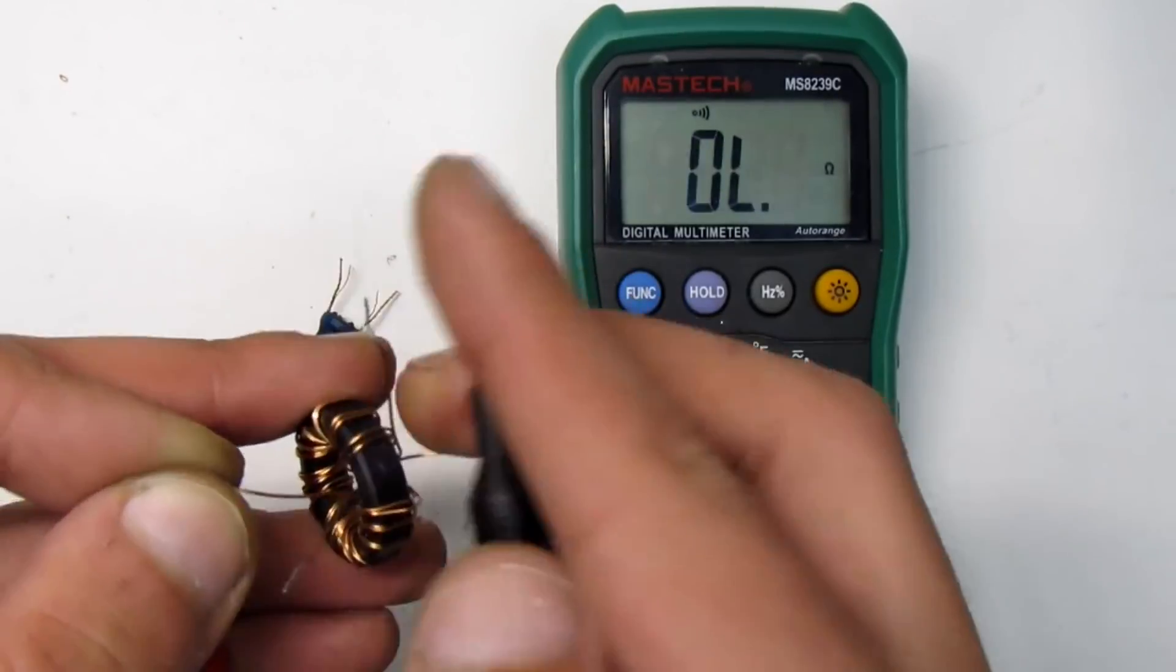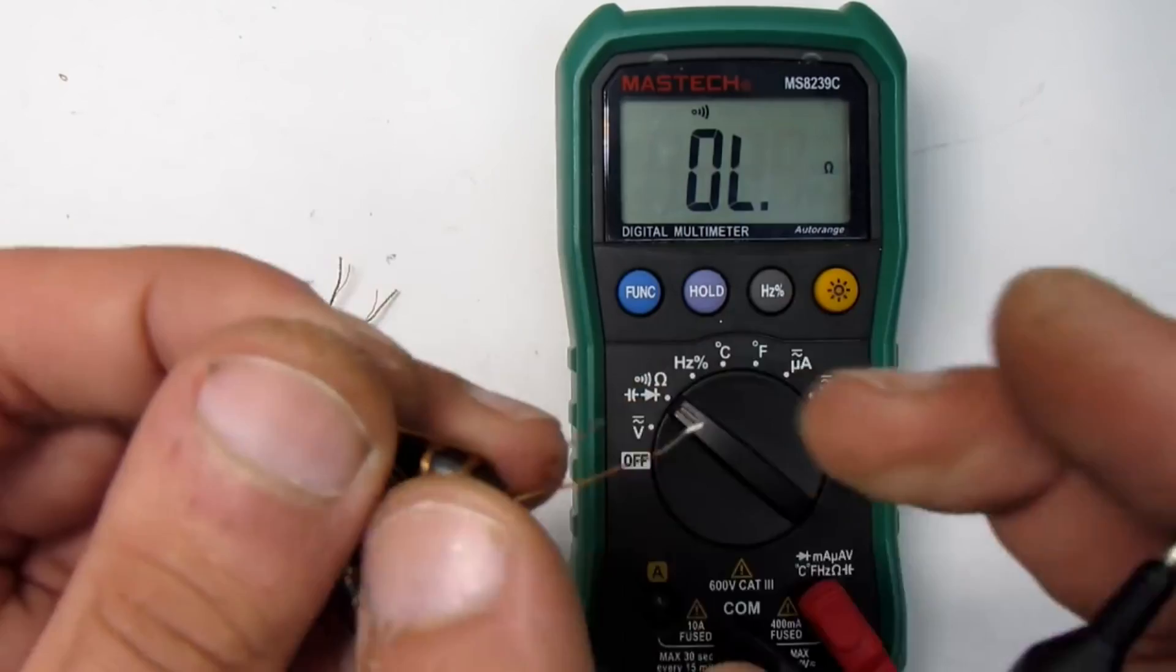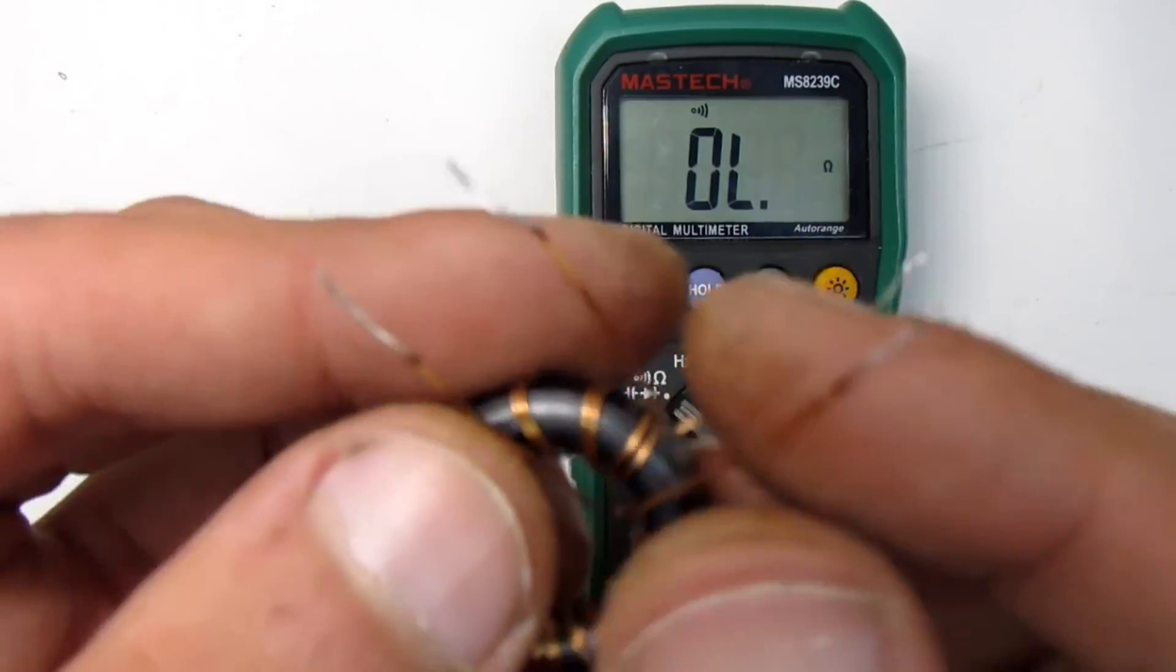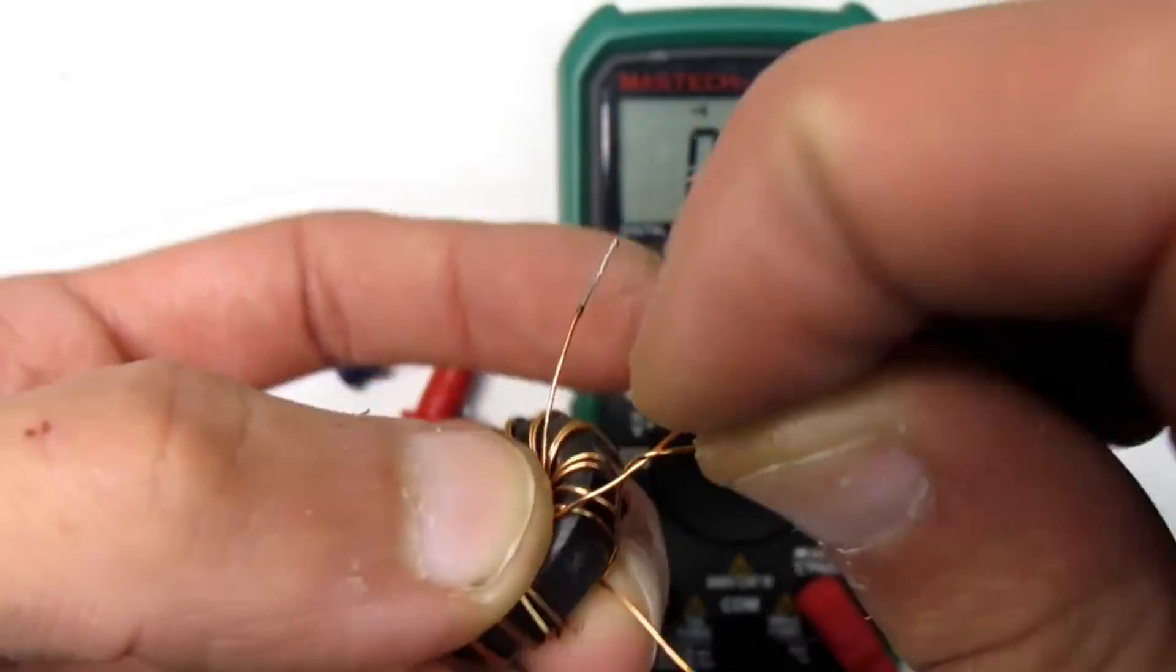Using a multimeter, find the ends of the windings. For example, I show the process with a ring. The start of primary winding connects to the end of secondary. It forms the middle point.